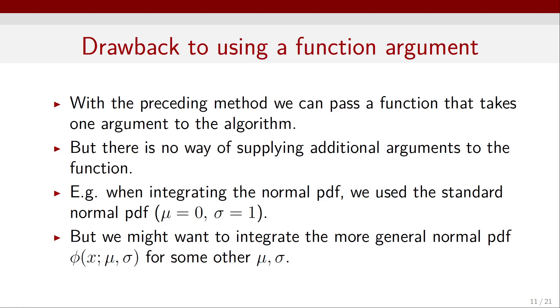Now, all this is great, but there's one small drawback. With the preceding method, we can pass a function that takes one argument to the algorithm, but there is no way of supplying additional arguments to the function. For example, when integrating the normal pdf, we use the standard normal pdf with a mean of 0 and variance of 1, but we may want to integrate the more general normal pdf, phi of x with parameters mean mu and sigma, for some other values of the mean and the variance.